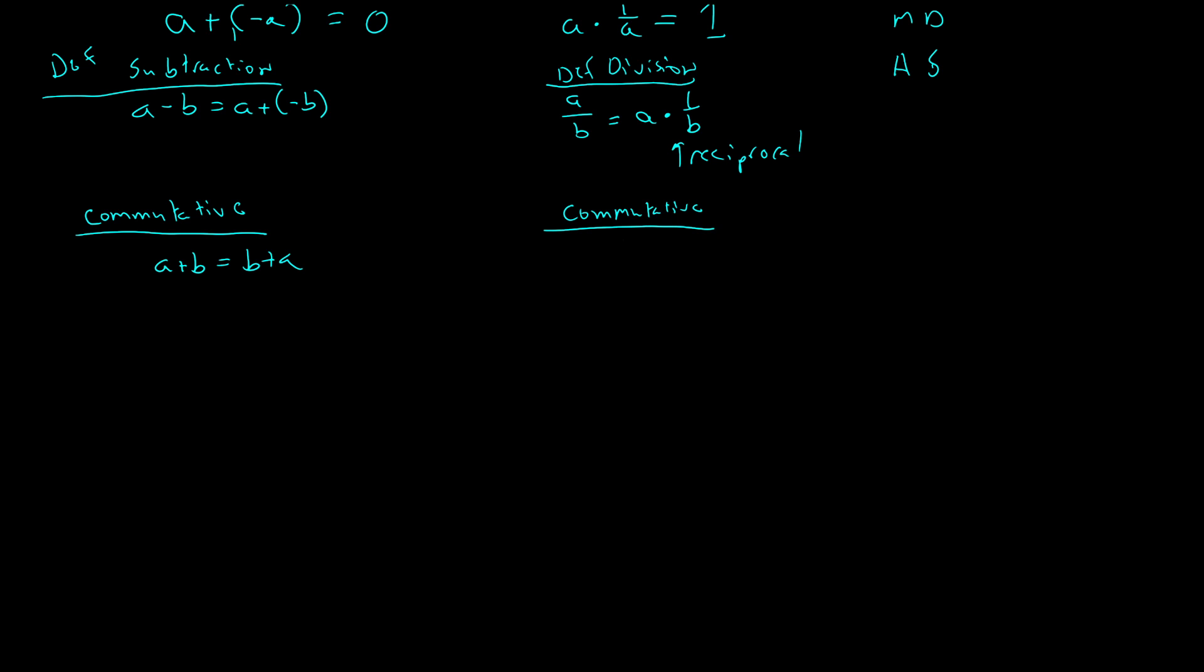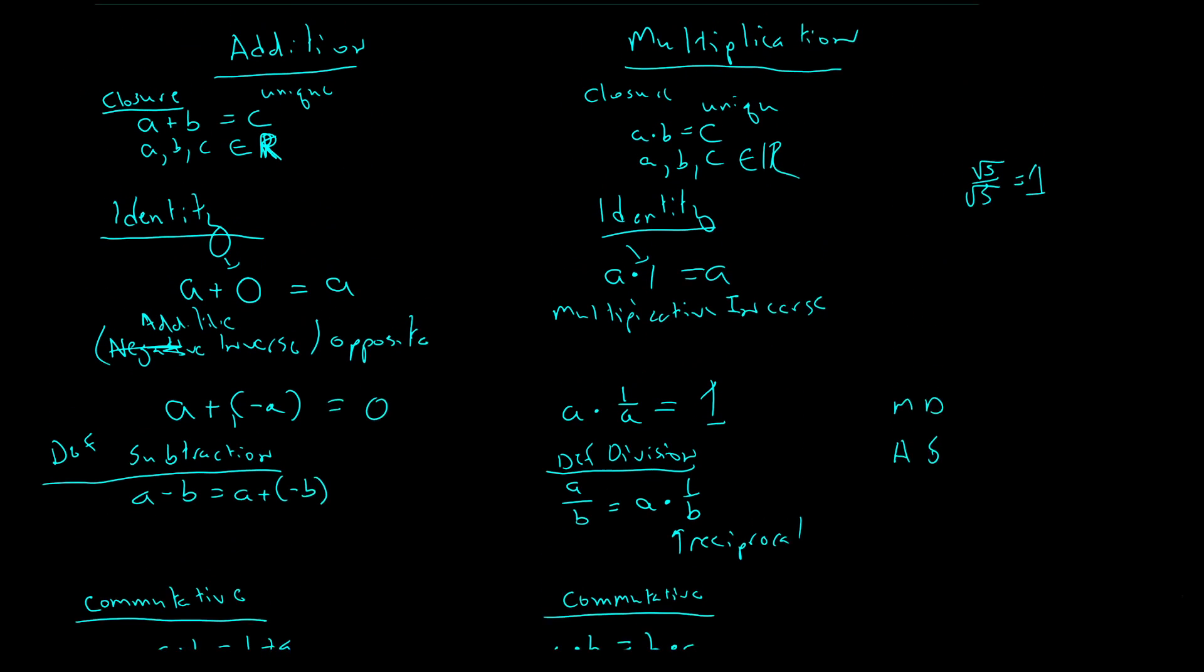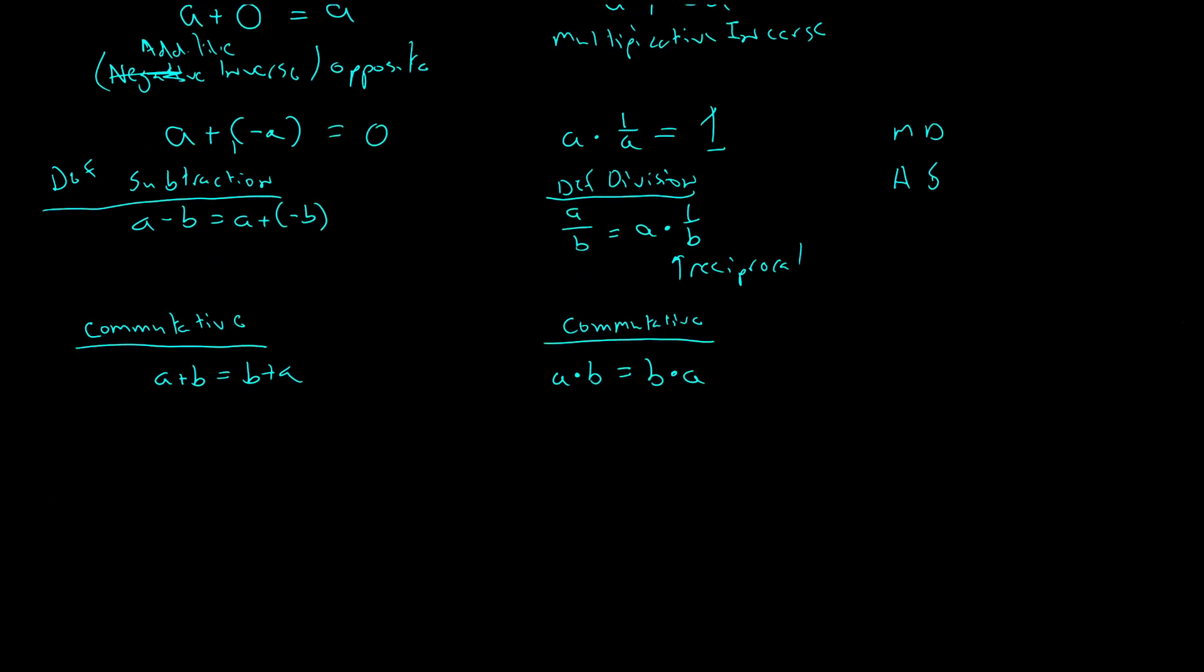But multiplication is also commutative. And again, in vectors, when you multiply things, it doesn't commute. But for real numbers, it does. The order I multiply in doesn't matter. I'm doing a list of additions and multiplications here.